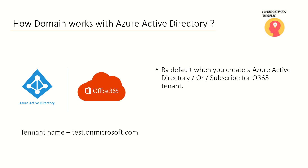When you create an Azure Active Directory or subscribe for any Office 365 service, the very first name you enter for your tenant gets registered as a domain. For example, if I subscribe for Office 365 and choose the name test.onmicrosoft.com, that domain will be registered with my tenant, and I can create users with UPN like user@test.onmicrosoft.com.